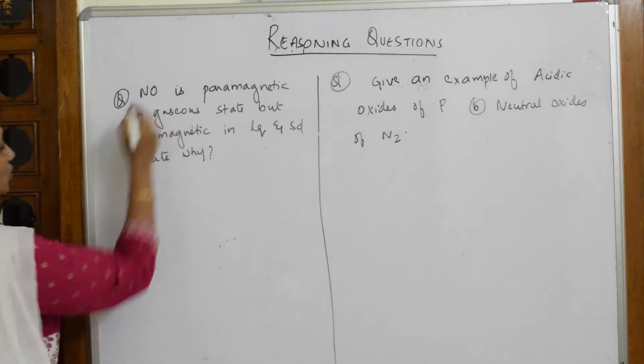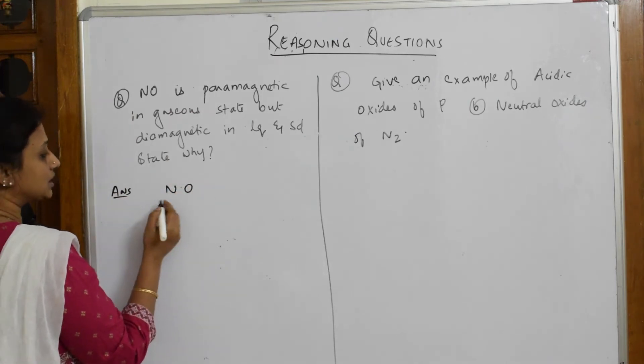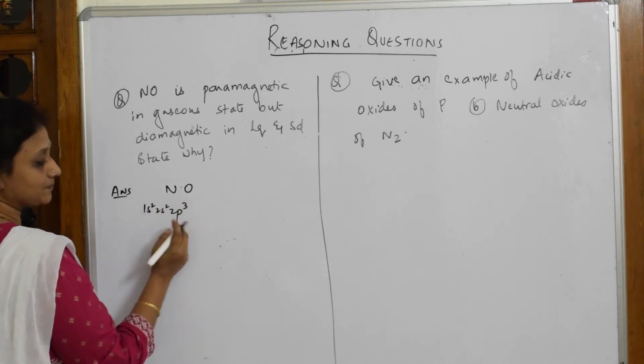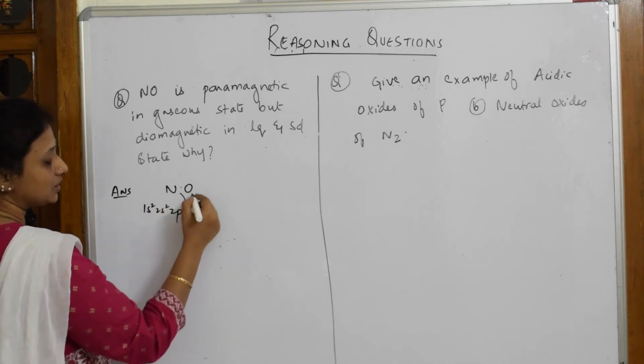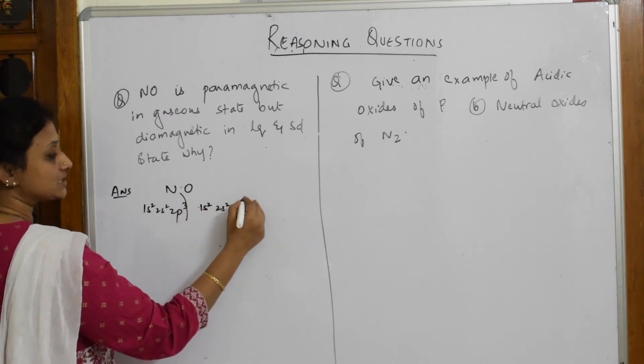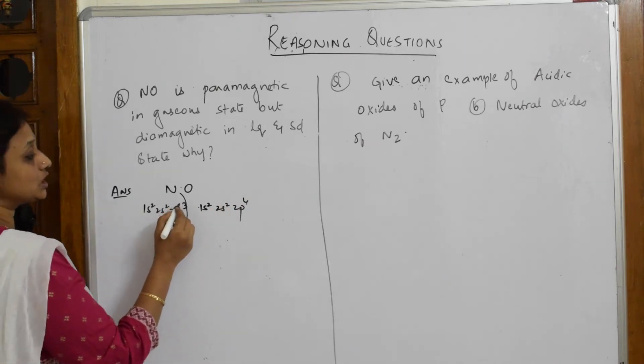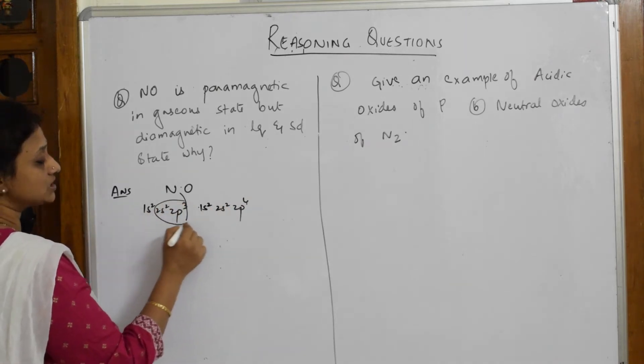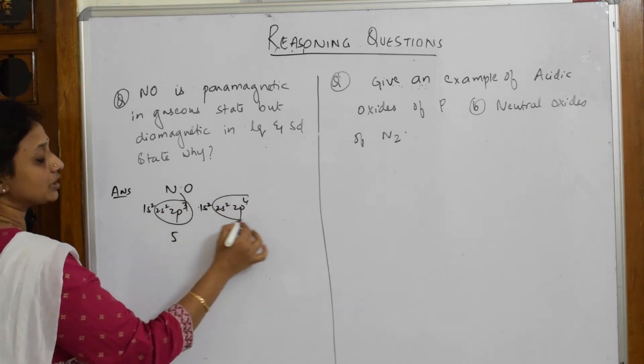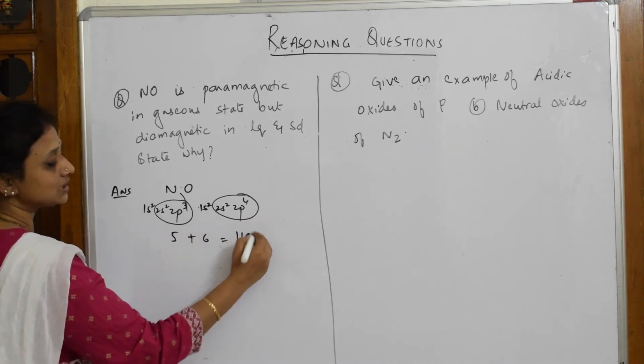They said NO. Let us write the configuration or count the number of electrons. In nitrogen, the configuration is 1s², 2s², 2p³. For oxygen, 1s², 2s², 2p⁴. The total number of valence electrons: nitrogen has 5, oxygen has 6. Total electrons are 11.